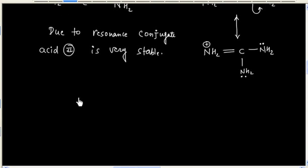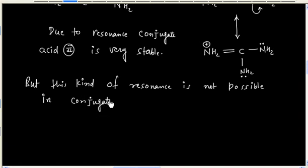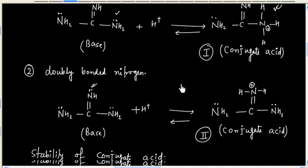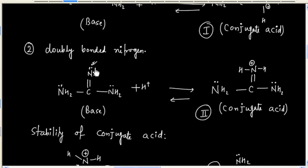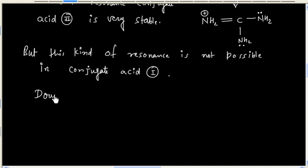This kind of resonance is not possible for conjugate acid 1. Conjugate acid 2 is very stable. This means when we protonate the doubly bonded nitrogen, the corresponding conjugate acid is more stable. So we can say the doubly bonded nitrogen gets protonated.